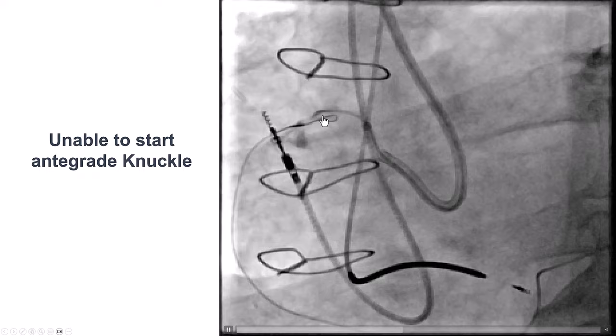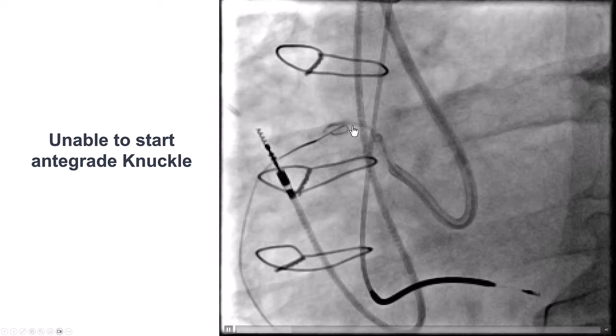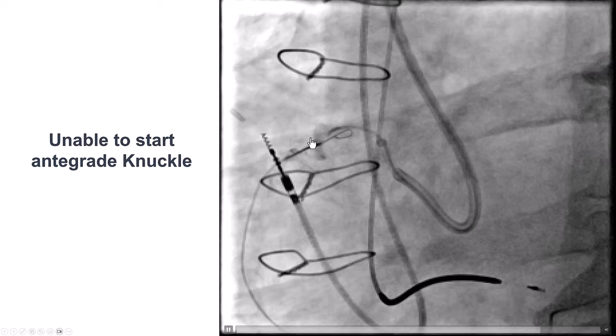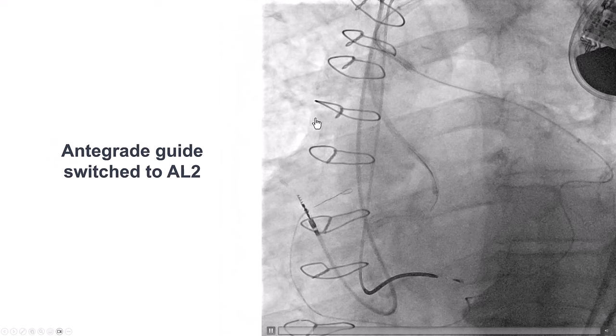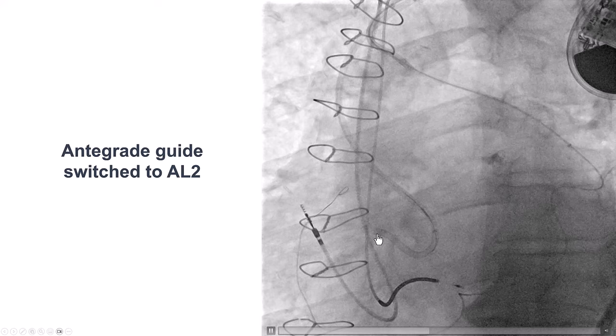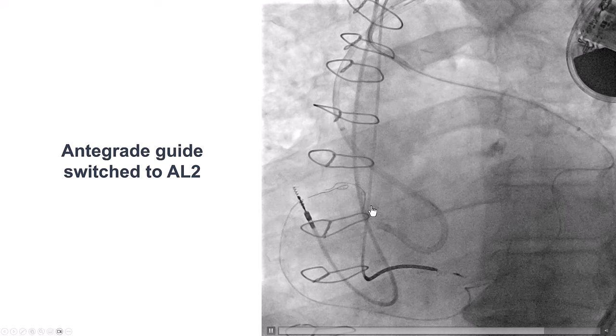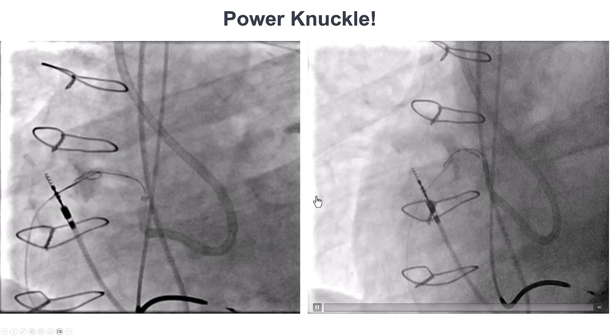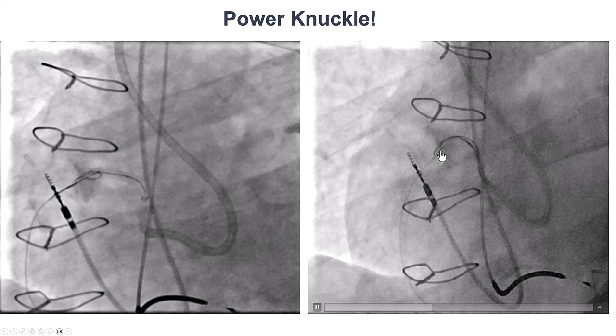We were now trying to get an antegrade wire into the extraplaque space and then do the reverse CART, but we had a lot of difficulty advancing the wire into the extraplaque space. We changed the antegrade guide to get more support — similar to the retrograde guide, we used an Amplatz Left 2, which is more supportive than the Amplatz 1. There was again a lot of difficulty engaging, though we also had a guide extension and were finally able to get some penetration and advancement into the vessel.